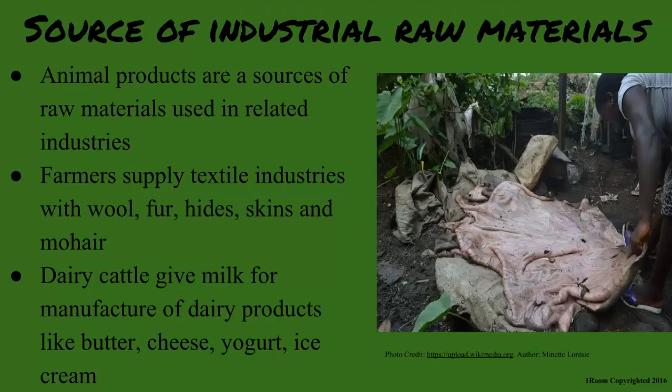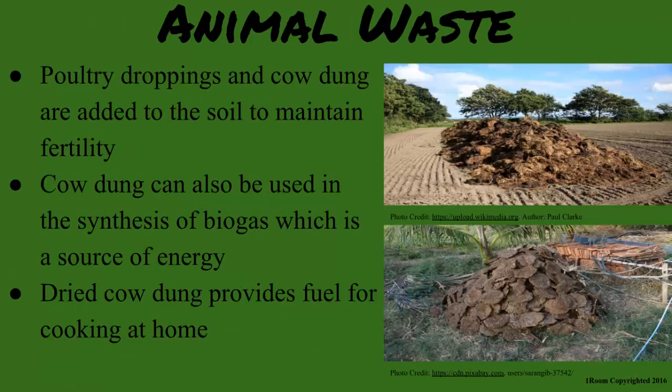Also, animal products are a source of raw materials used in related industries. For example, textile industries rely on farmers to supply them with wool, fur, hide, skins, and mohair. Dairy cattle give milk that is used to process and manufacture dairy products like butter, cheese, yogurt, and ice cream. Animal wastes can be useful as well — poultry droppings and cow dung are added to the soil to maintain its fertility, like in compost manure. Cow dung can also be used in the synthesis of biogas, which is a source of energy. Dried cow dung can locally be used to provide fuel in homes as well.